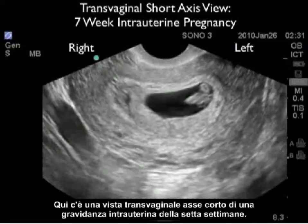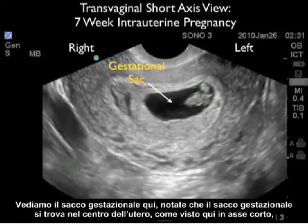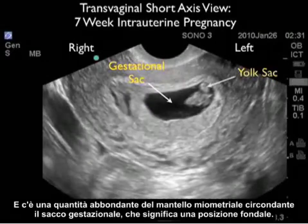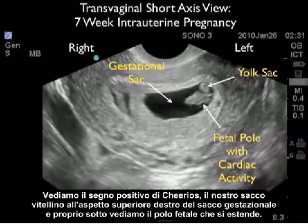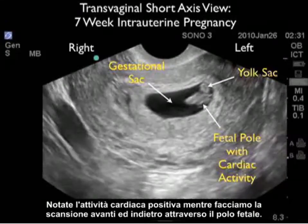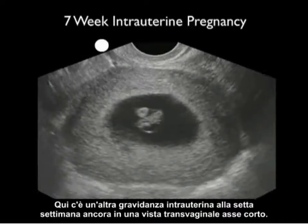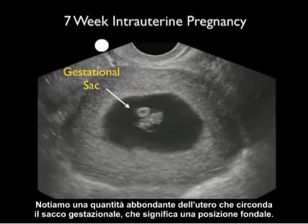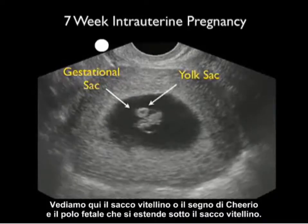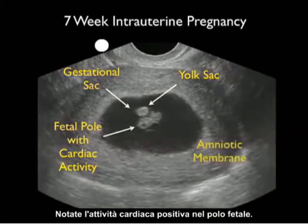Here's a transvaginal short axis view of a 7-week intrauterine pregnancy. The gestational sac is located in the center of the uterus with a good amount of myometrial mantle surrounding it, signifying a fundal location. We see the positive cheerio sign or yolk sac in the upper right aspect of the gestational sac, and just below it the fetal pole stretched out with positive cardiac activity noted as we scan back and forth. Another 7-week IUP in transvaginal short axis similarly shows the yolk sac and fetal pole with positive cardiac activity.